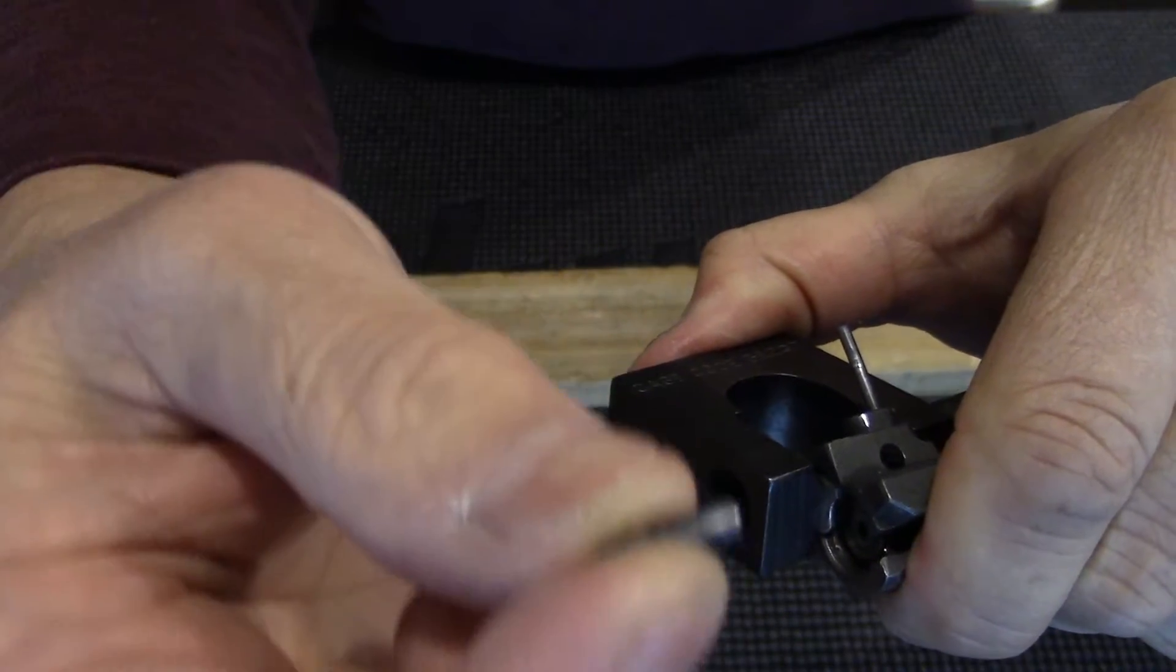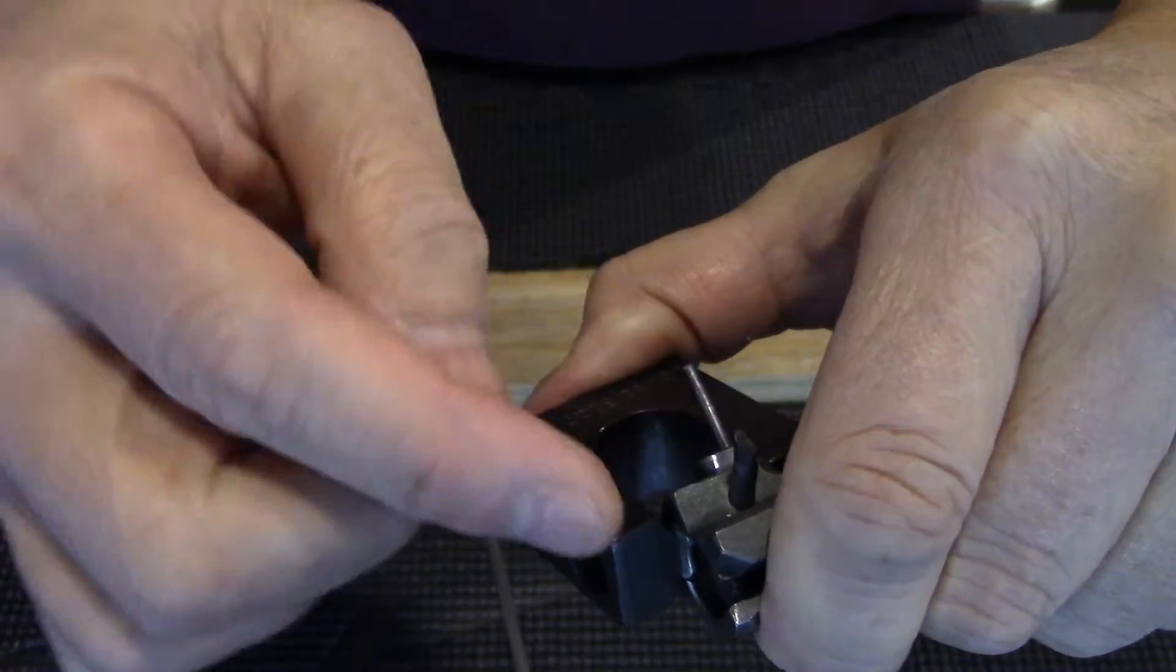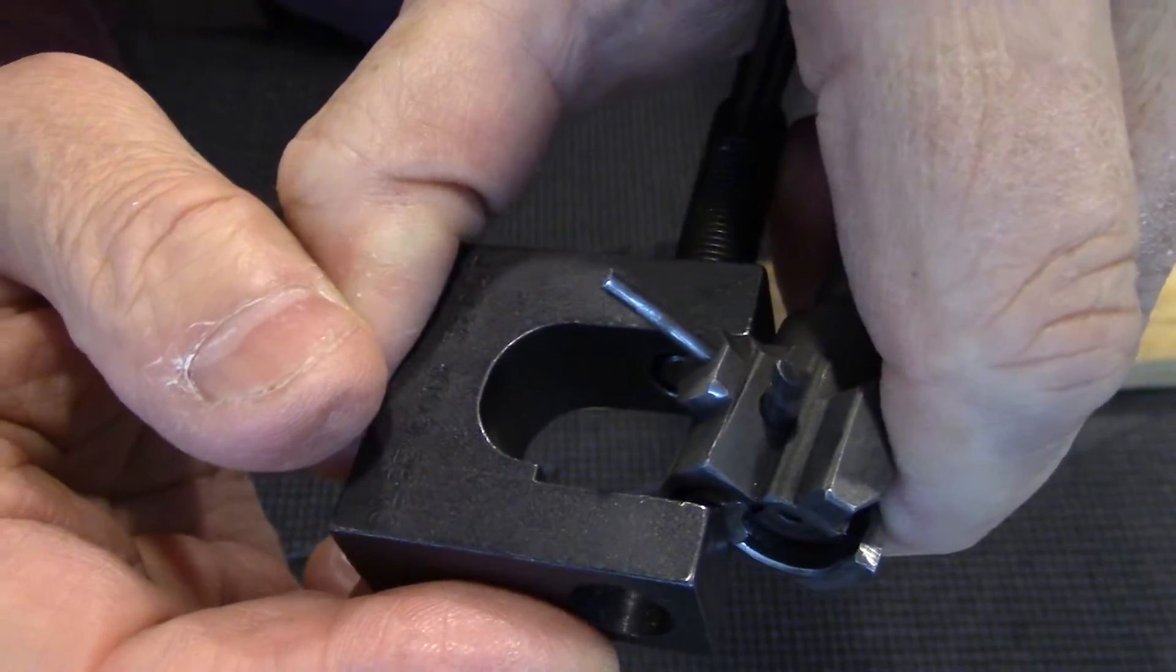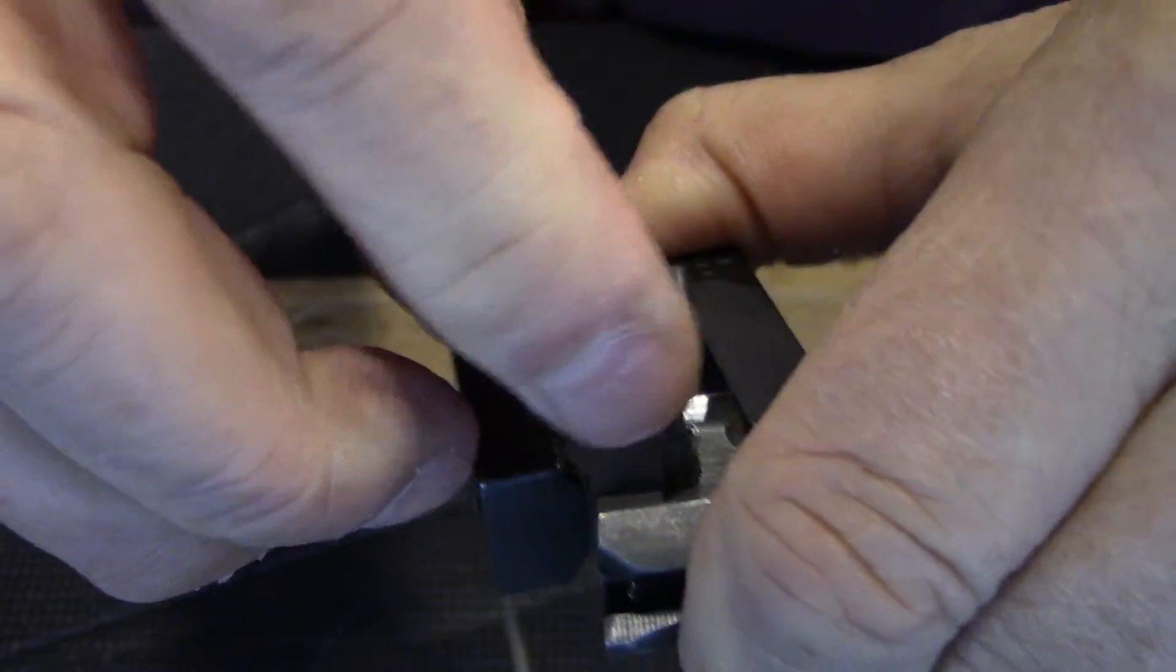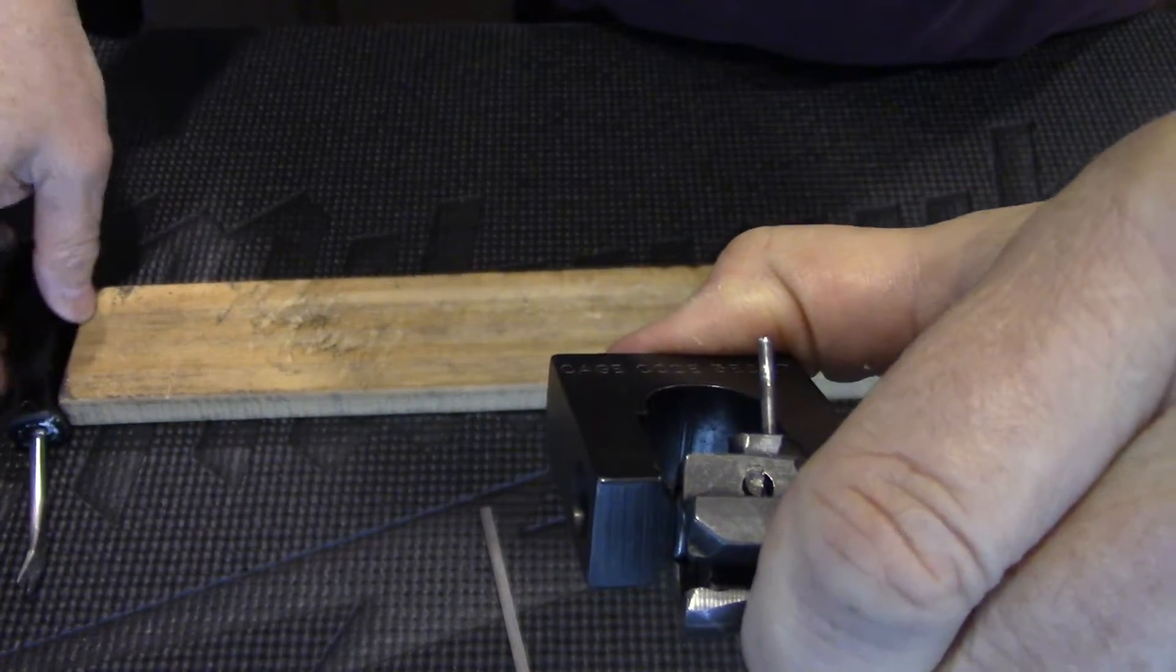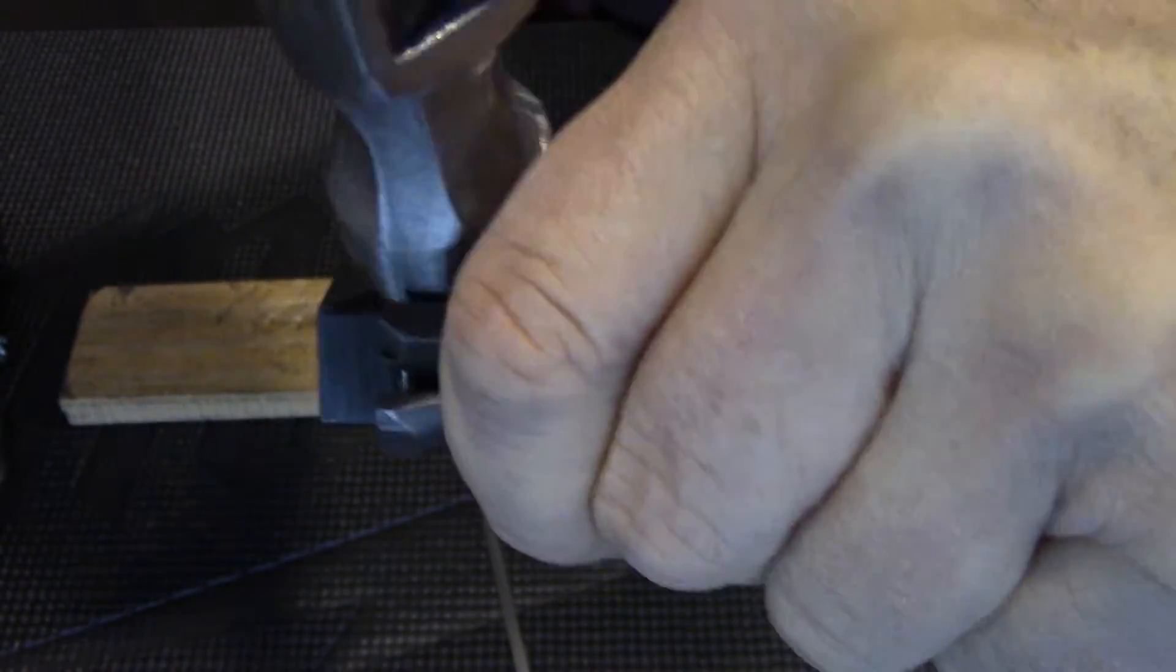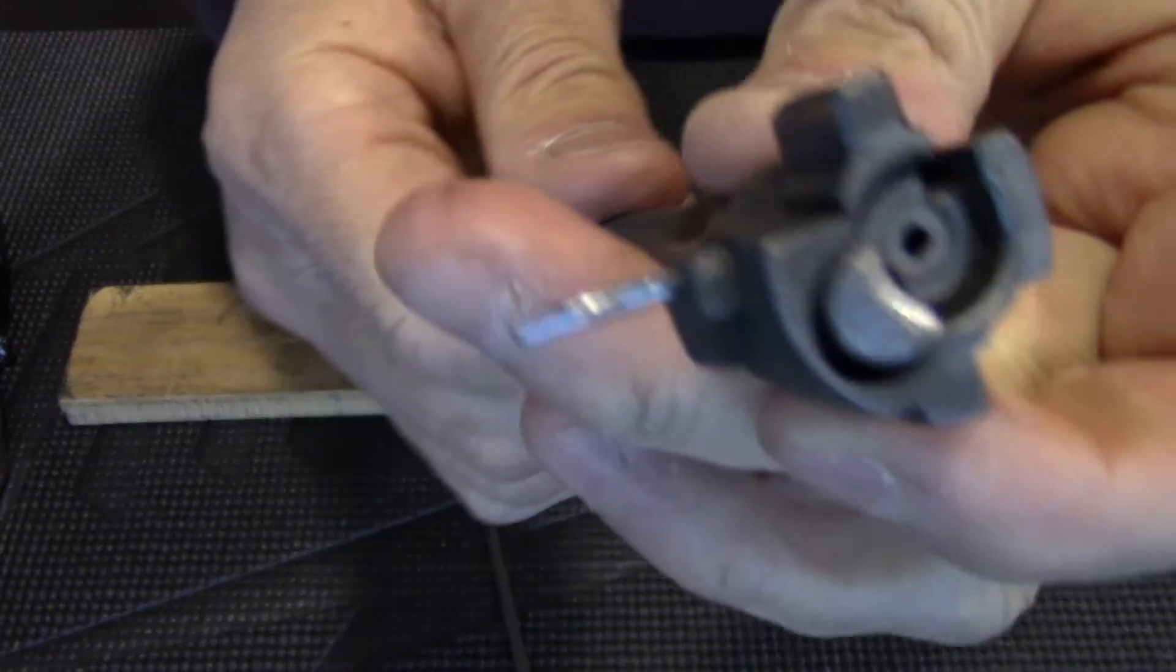Then you get the extractor pin or retainer and slide it down with the pointy end up, like this. Push it in. Tap it in gently. And you can release it.